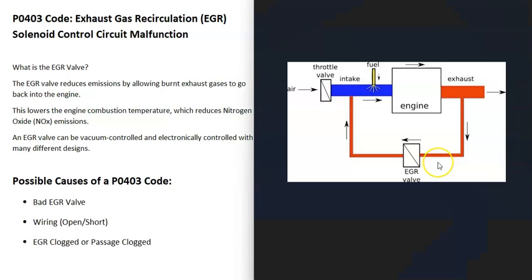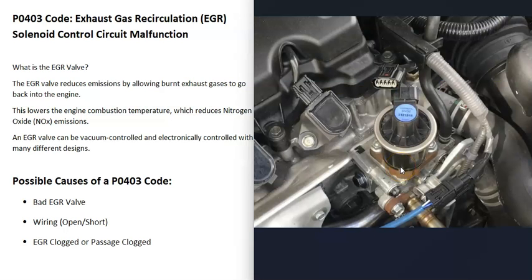What does this mean? Modern engines have what's called an EGR valve that basically feeds exhaust gases back into the engine. What it does is it lowers the temperature inside of the cylinders, which reduces nitrogen oxide and really improves the emissions the vehicle's putting out. When you get a P0403 code, the computer is seeing a problem with this, and it's going to have to be troubleshooted to know why.